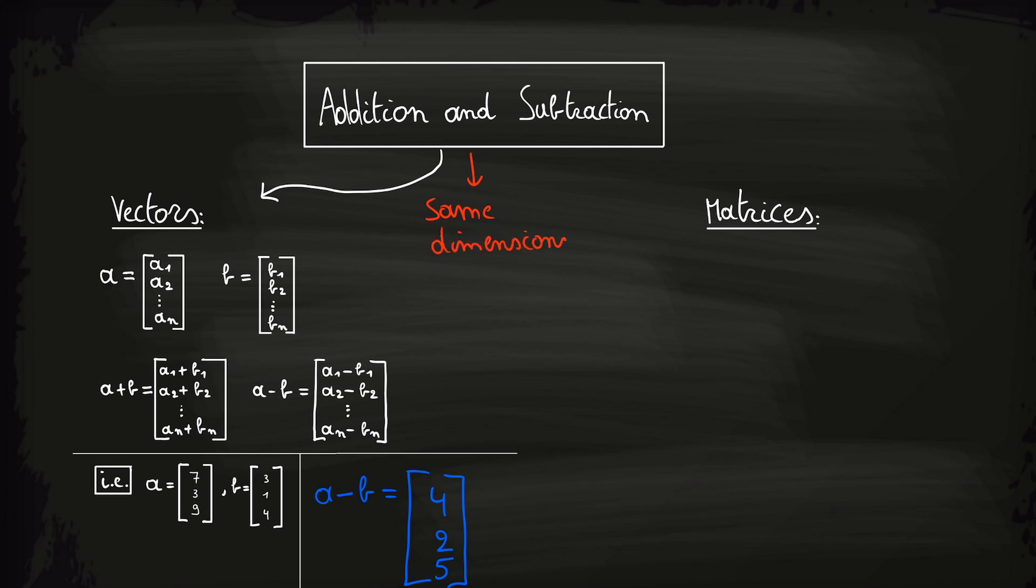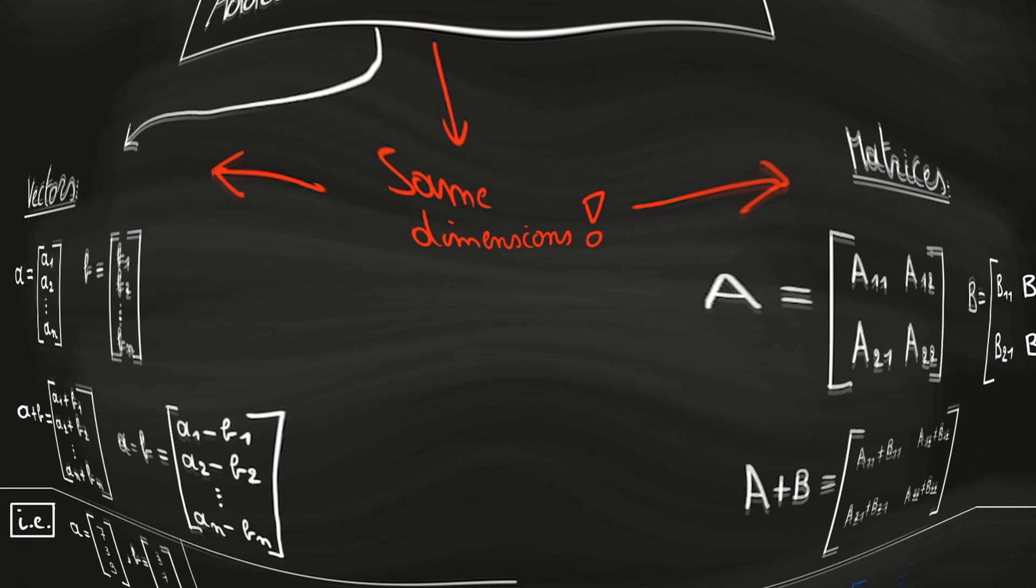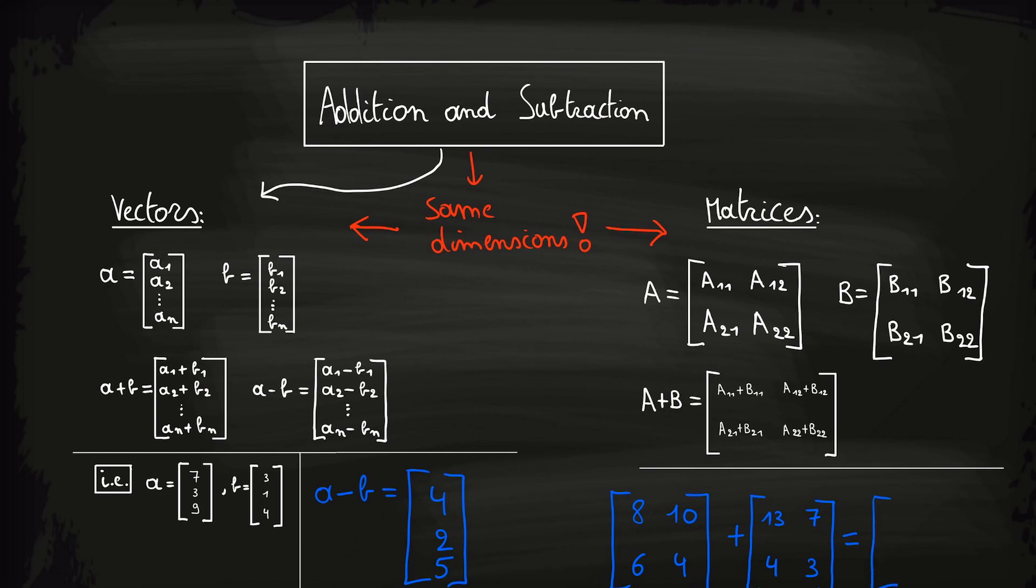For matrices on the other hand, the same rules apply. So in order to add or subtract two matrices, they also need to have the same dimensions. Let's assume we have these two matrices, a and b. Then we can add or subtract like this. We can look to an example where we add two matrices. In fact, we just add each a subscript i,j element with each b subscript i,j element. Subtraction is done in the exact same manner.